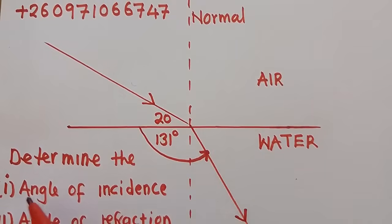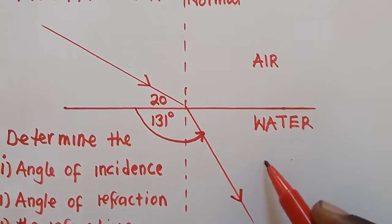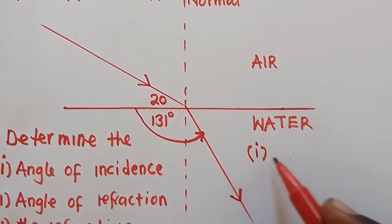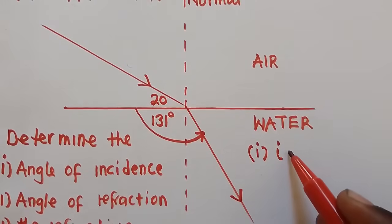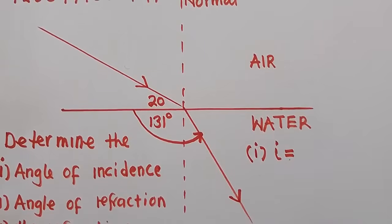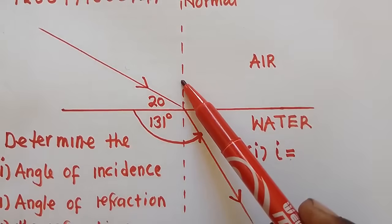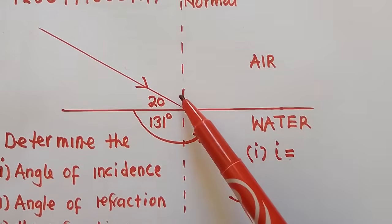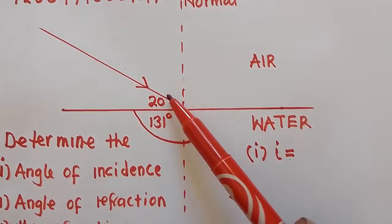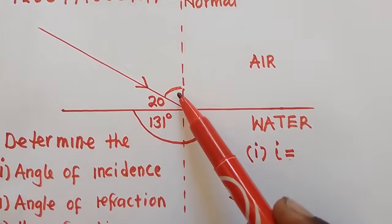The first question asks us to determine the angle of incidence. The angle of incidence is found between the incident ray and the normal ray. You know that this is the normal ray, so the angle of incidence is the angle between the incident ray and the normal.